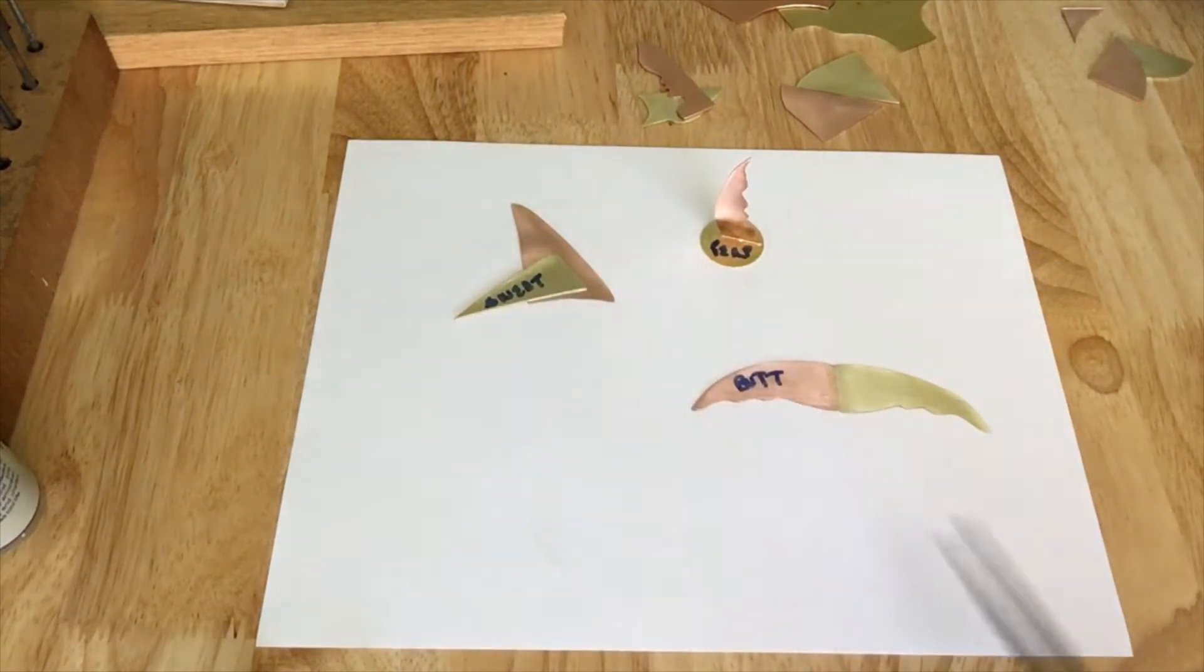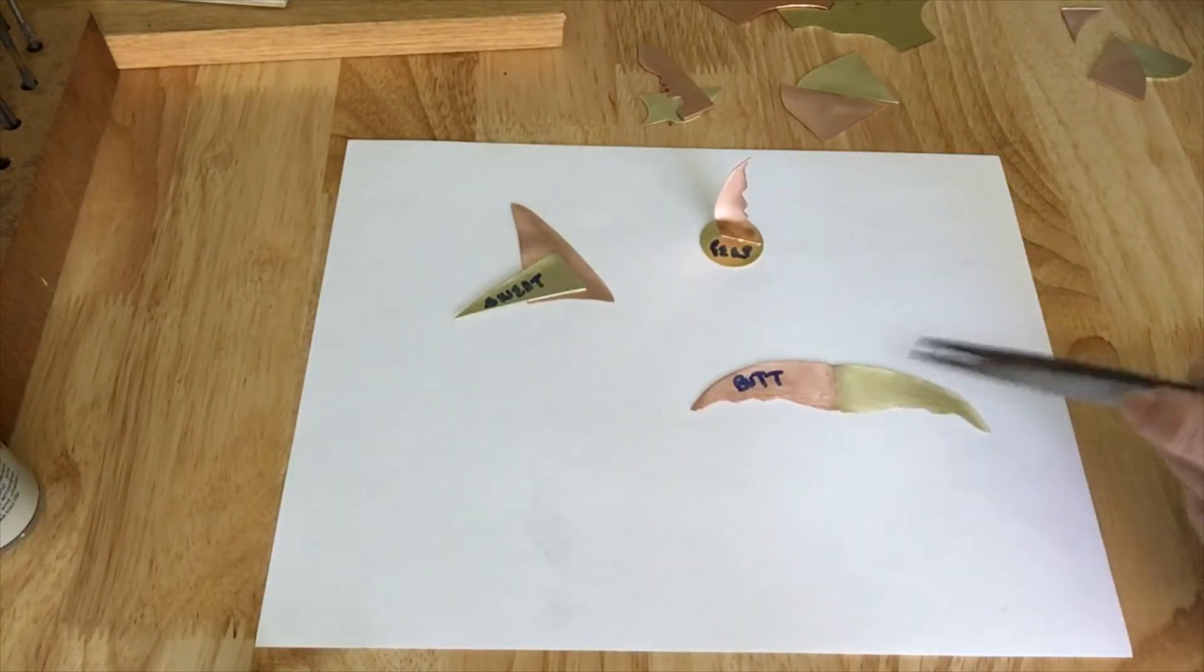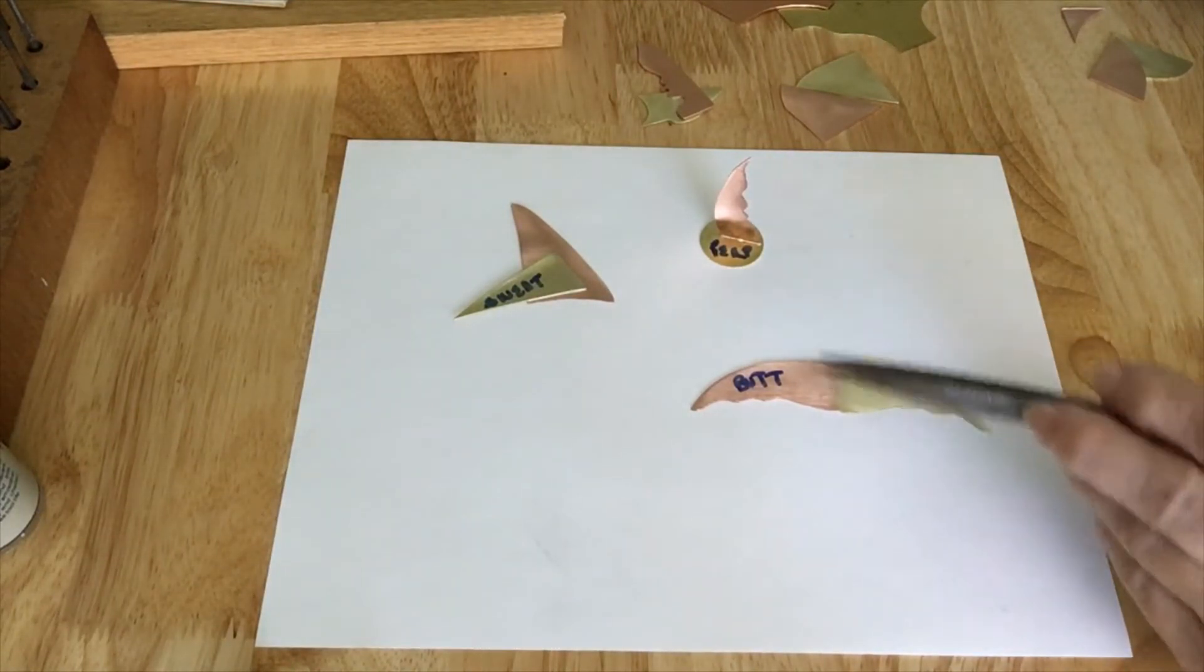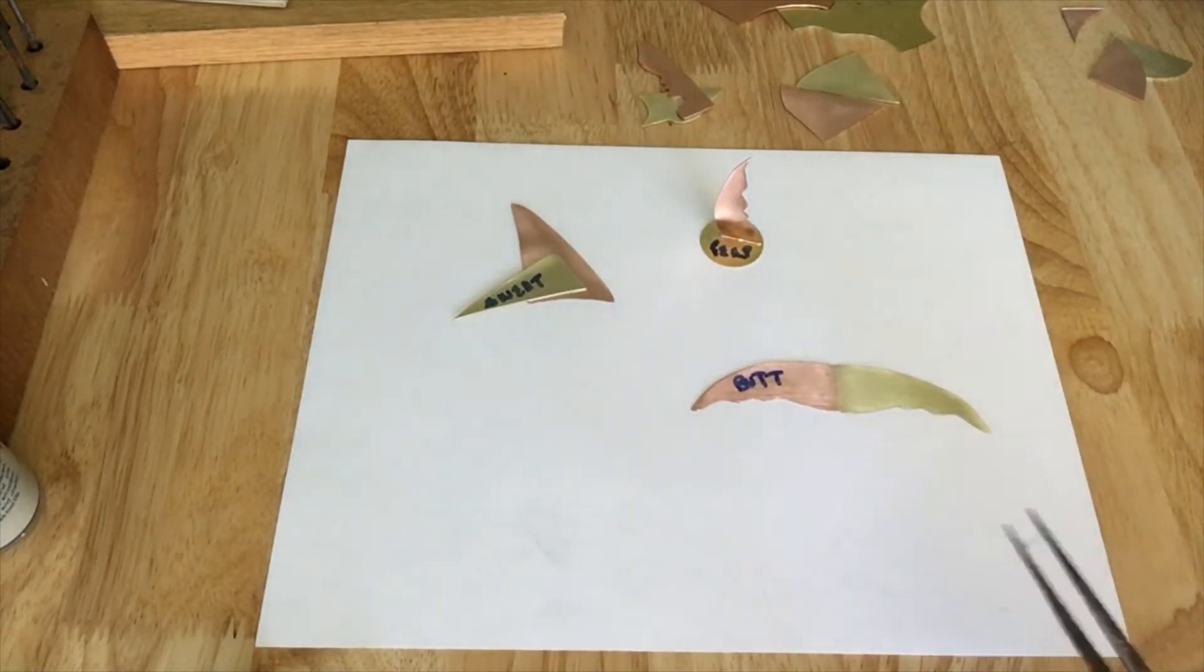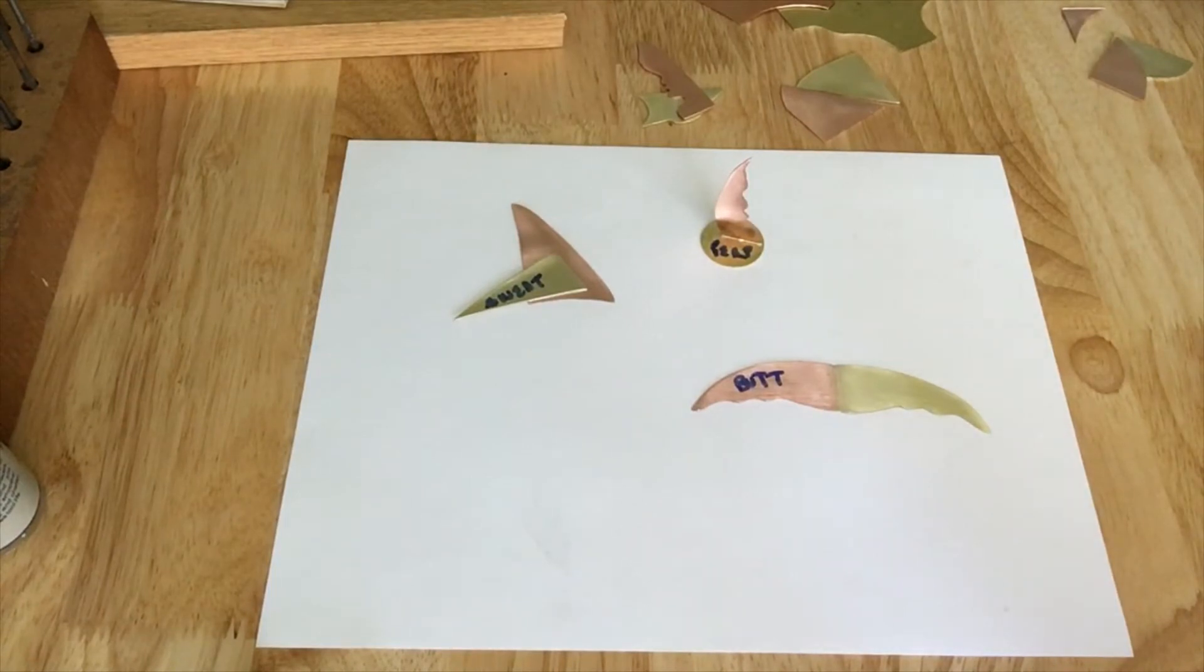So all together we need six shapes. They can be geometric, they can be free form, either or. If you can get an idea of the size of these pieces, I would say keep them about the size of these. You don't want them too large, you don't want them too small. It makes soldering more difficult.